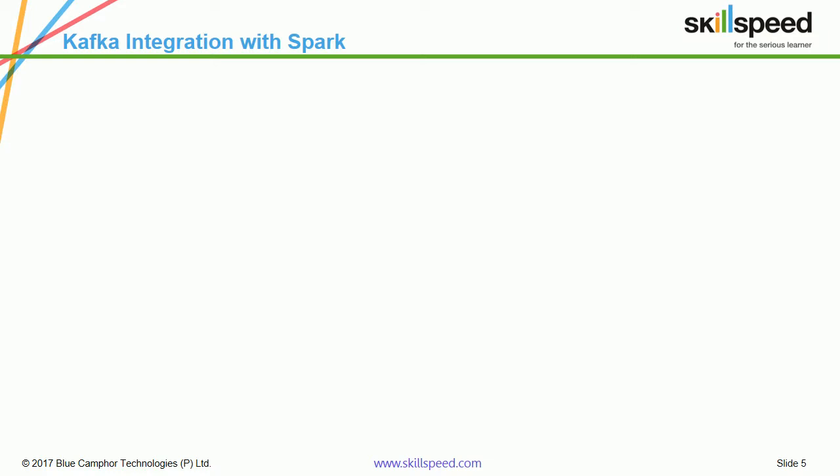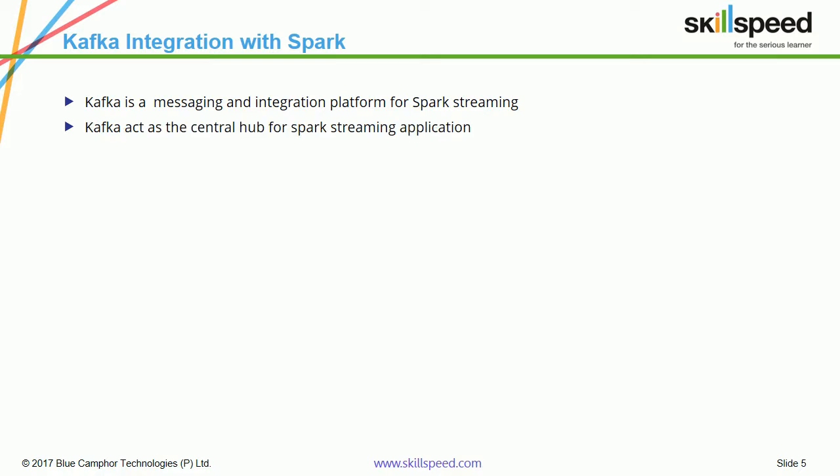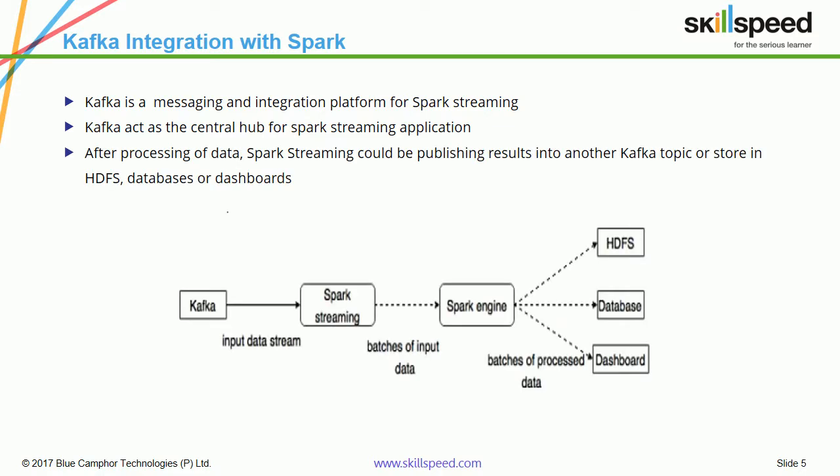Kafka is a very reliable publish-subscribe based distributed messaging system which can be very well integrated with Spark Streaming. In the case of Spark Streaming, Kafka can be considered as the source of our input stream. The Spark Streaming application can connect with the Kafka cluster, get the data, process it, and then store it either back onto the Kafka cluster or to other places such as HDFS, a NoSQL database, or even a dashboard.